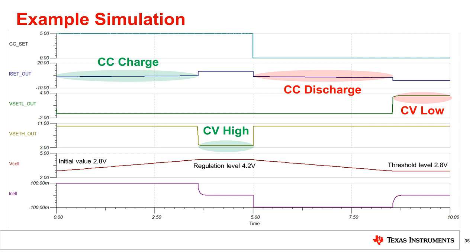The system stays in CV high mode until the CC set control signal changes to force a discharge. The CV high amplifier goes inactive as the battery voltage drops away from the regulation voltage, and as is visible on the I-cell plot, the battery begins to discharge.